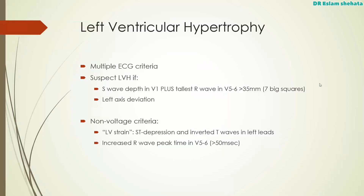There are multiple different ECG criteria that can be used to identify left ventricular hypertrophy. Ultimately though, you're using the ECG to become suspicious of hypertrophy, and if you really want to be sure, you need to do an echo. You should suspect LVH if the S-wave depth in V1 plus the R-wave in V5 or V6 adds to greater than 35mm — that's more than 7 big squares.